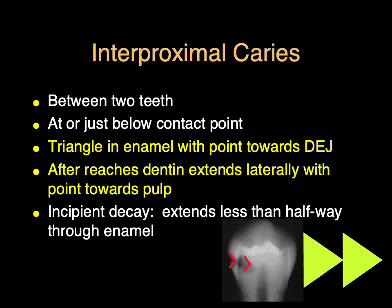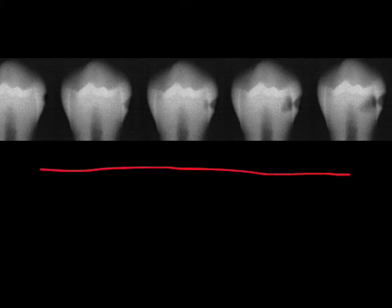Incipient decay, by definition, is decay that extends less than halfway through the enamel. Looking at this progression of decay from a research article done with the Dental Practice-Based Research Network, the decay goes from left to right and obviously gets more severe. This very first clinical example would be incipient decay.